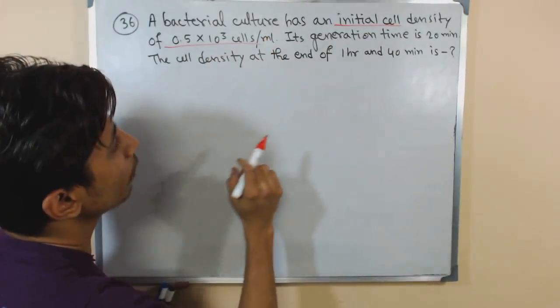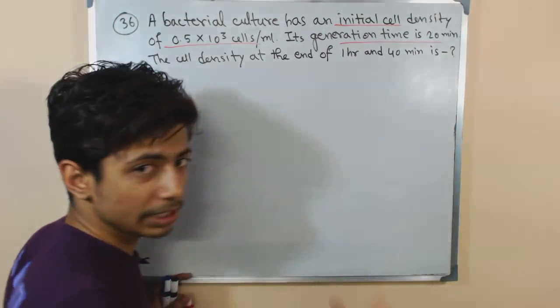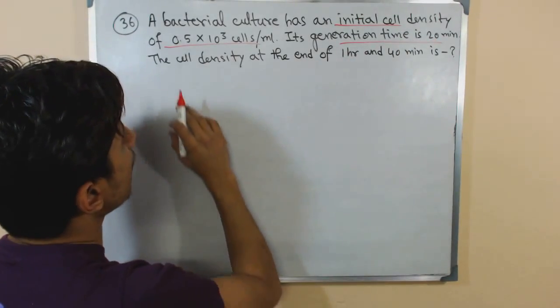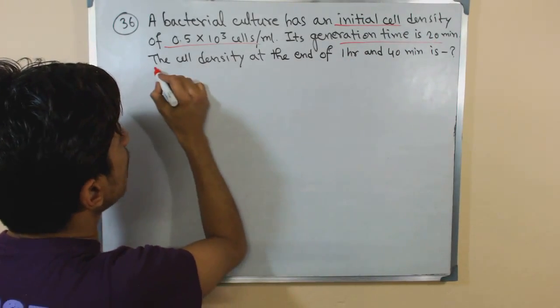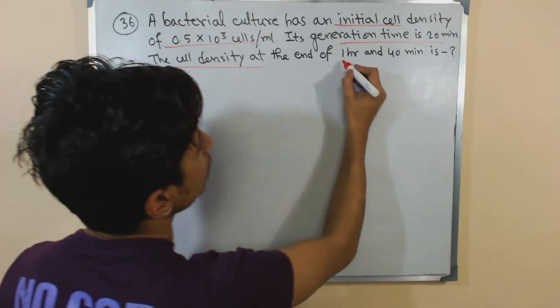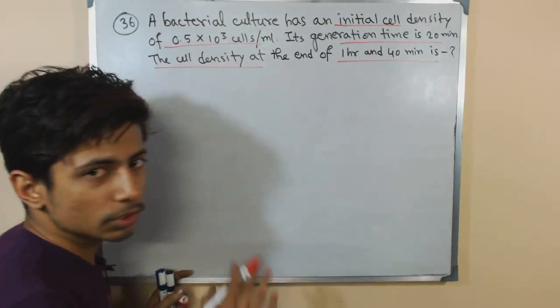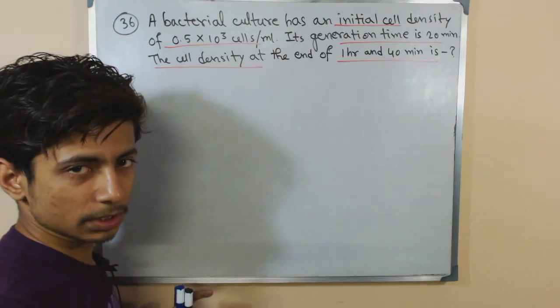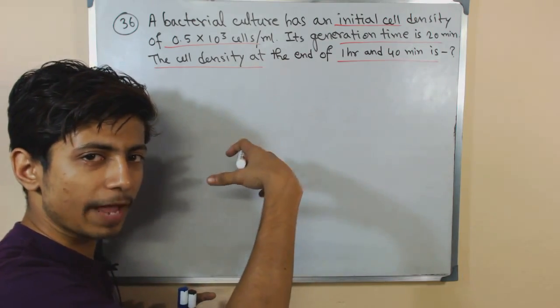Remember for any of this type of problem, in this case they provided us the initial cell density, they provide us the generation time or doubling time that is 20 minutes, and they asked us the ultimate cell density after a particular time.